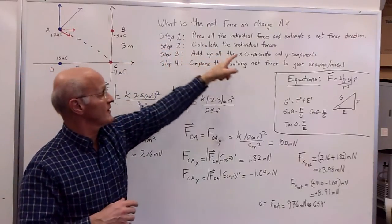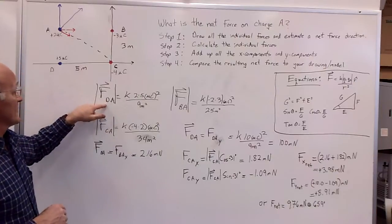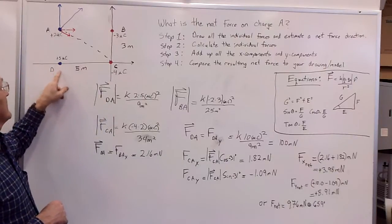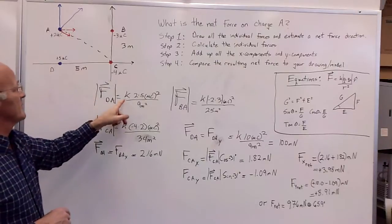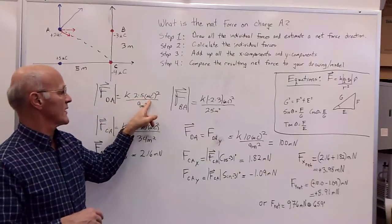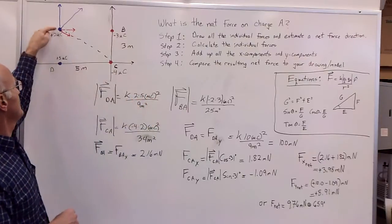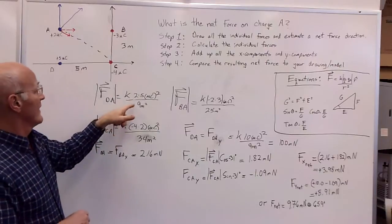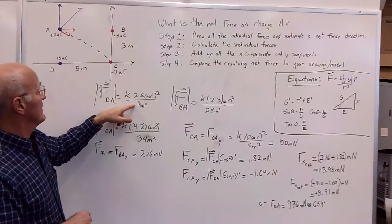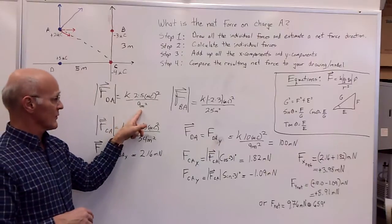Step two says calculate the individual forces, and so I already did that here with the force from D, or the blue charge down here on A, and so I went into K times Q times Q, and that's also in units of microcoulombs, and I squared those units, so 2 times 5, because I have 2 and 5 microcoulombs, and then I divided by the distance between them squared, which is 3 meters, so 3 meters squared is 9 meters squared.